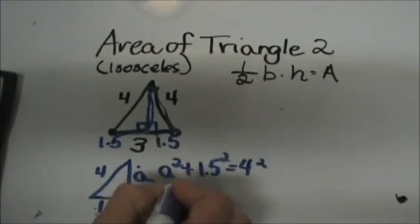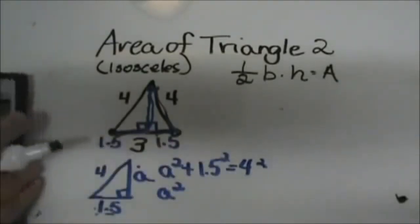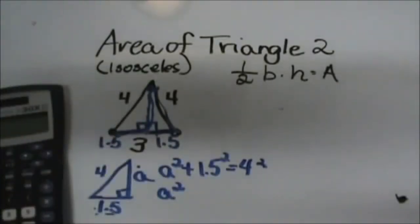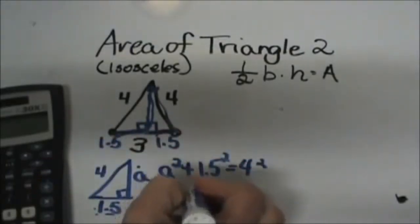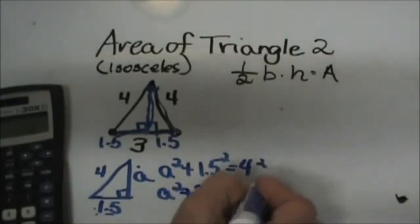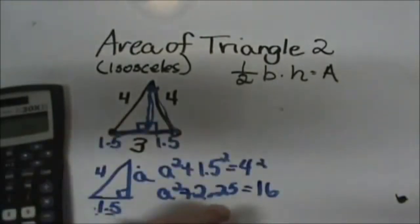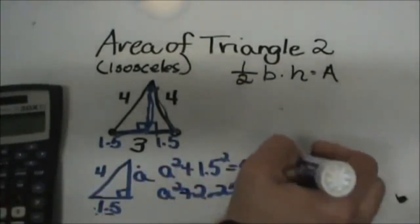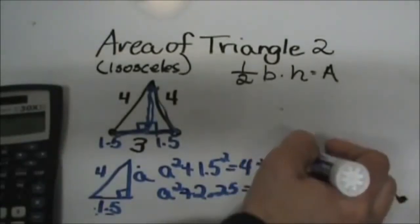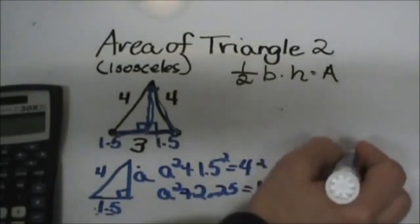So A² just comes down, 1.5 squared, grab your handy dandy calculator, 1.5 and hit your squared button and that's 2.25, and 4 squared is 16. So I'm going to take 16 and subtract 2.25, 16 minus 2.25 and that gives me A² is 13.75.